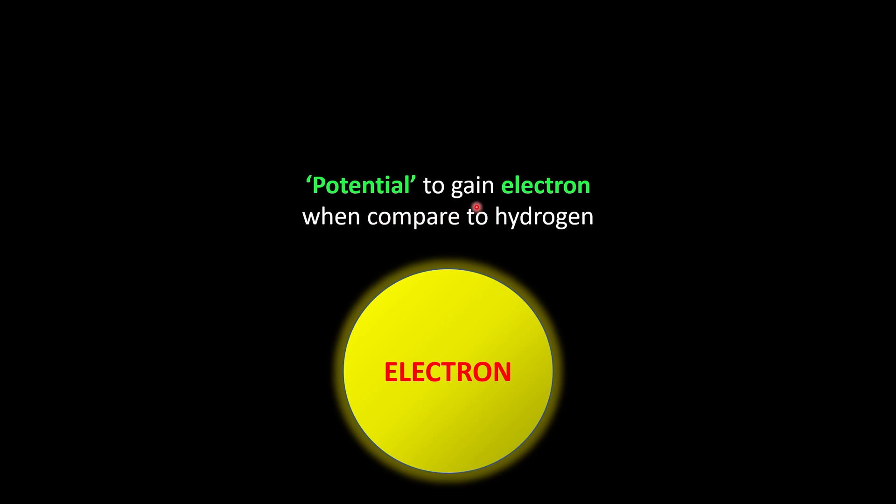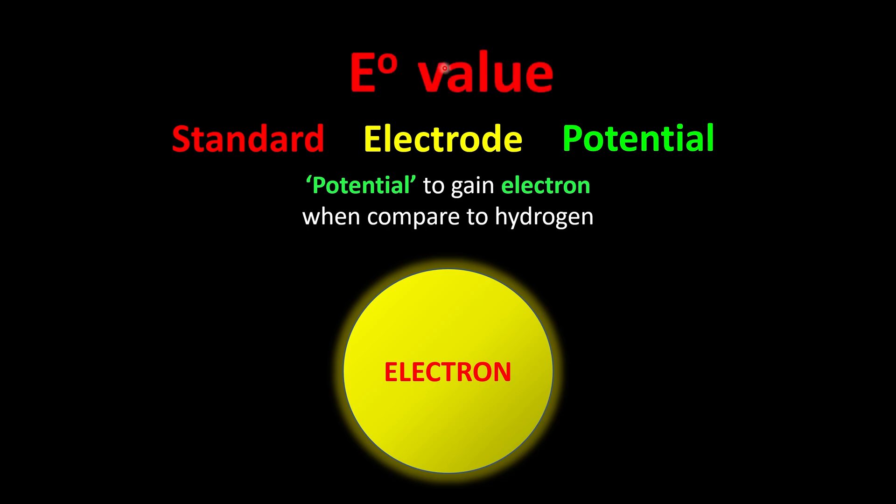So how do they compare? We're going to use the standard electrode potential where all of the substances are given an E° value. So this is pronounced as E naught value.